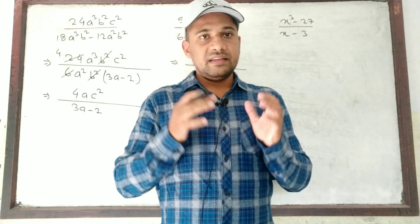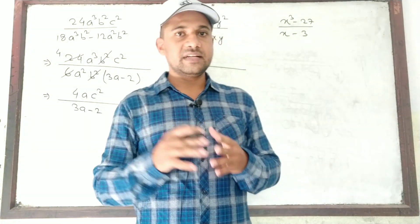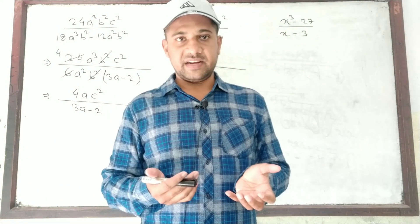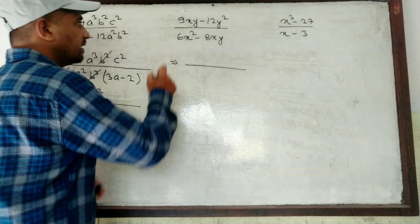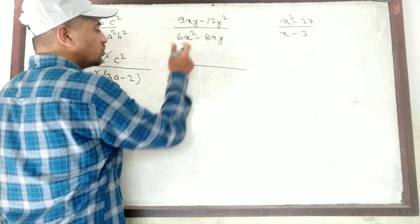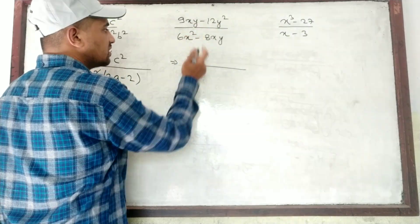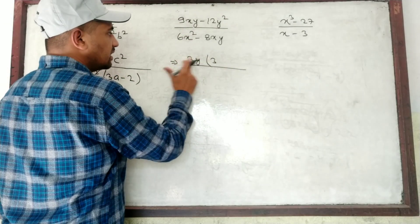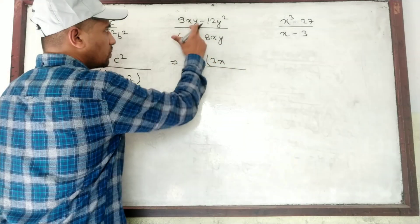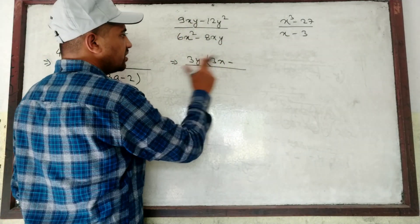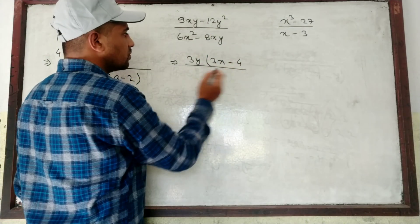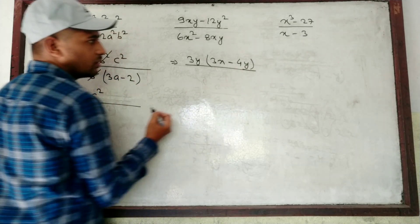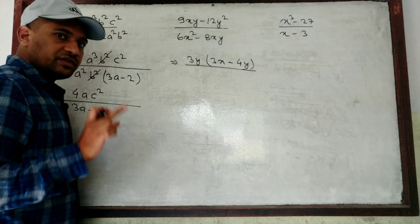In factorization, always take common first, then either use a formula or factorize further. For the numerator: 9 and 12 — common is 3. For the variables: X and Y² — common is Y. So 3 times 3 gives 9, and we write 3Y(3X minus 4Y). Remaining Y gives the second term.